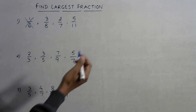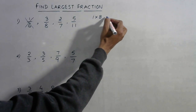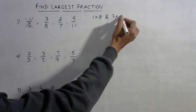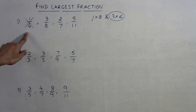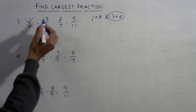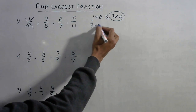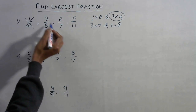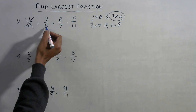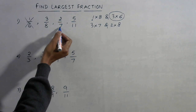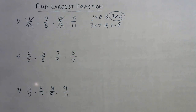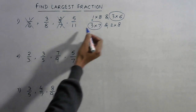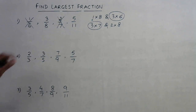I'll write the procedure here. For 3/8 and 1/6: one into eight is 8, three into six is 18 — so the fraction with numerator 1 is discarded. Now compare 3/8 and 2/7: three into seven is 21, two into eight is 16. Three into seven gives the larger product, so two into eight is smaller — 2/7 is discarded and we retain the numerator three.